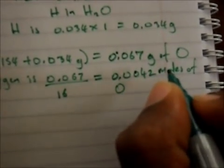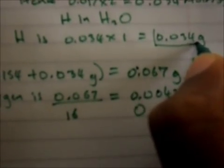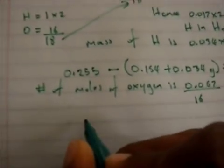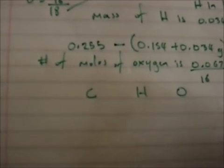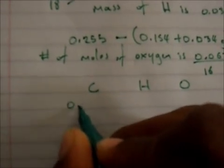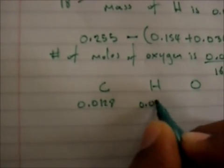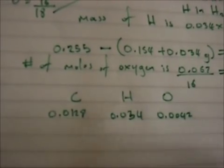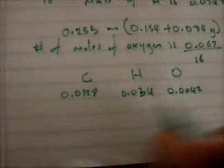Now we go to the empirical formula. We found the amount of carbon, which is 0.154 grams, hydrogen is 0.034 grams, and oxygen is 0.067 grams — that answers the first part of the question. For the empirical formula, we write carbon, hydrogen, and oxygen with their moles: carbon is 0.0128, hydrogen is 0.034, and oxygen is 0.0042. We now simply find the mole ratio.